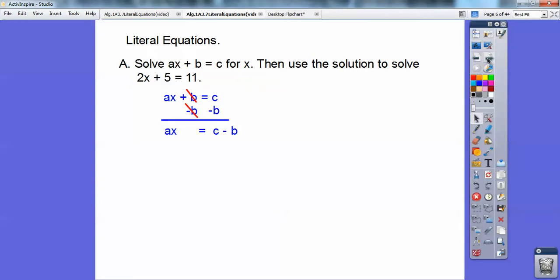Now ax means a times x. So we're going to divide, do the opposite of times. Divide both sides by a because we need to solve for x. And when we divide both sides by a, the a's cancel. So we get x equals c minus b over a. So we got that first sentence done.